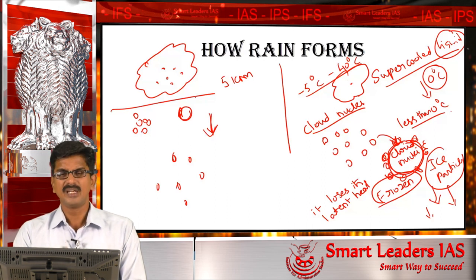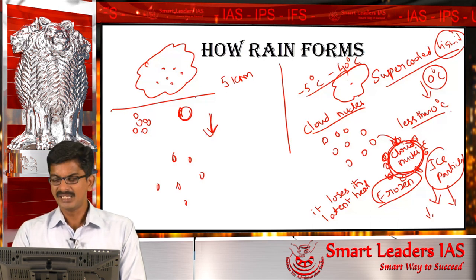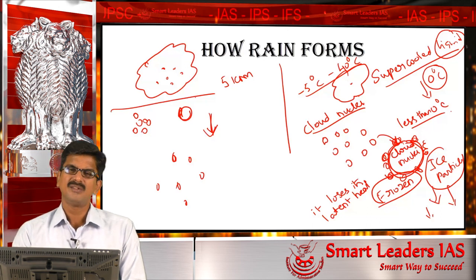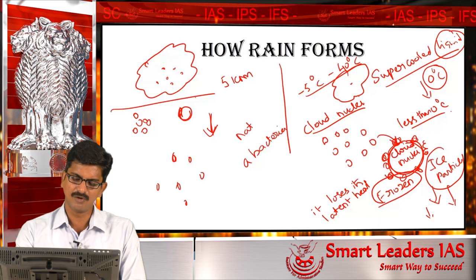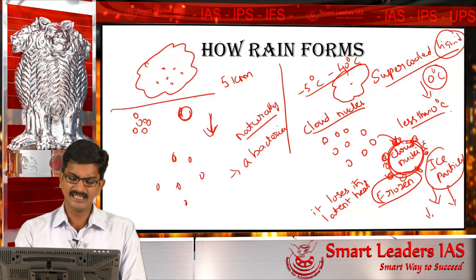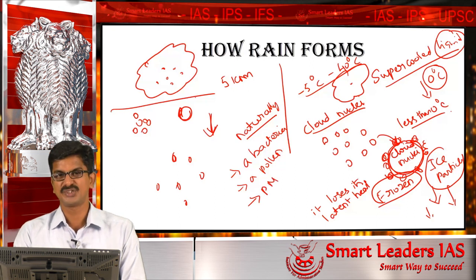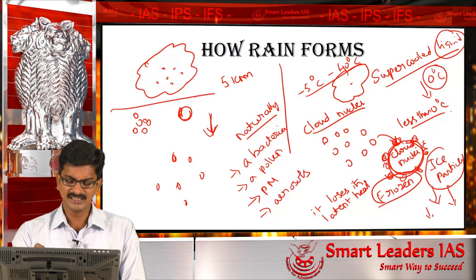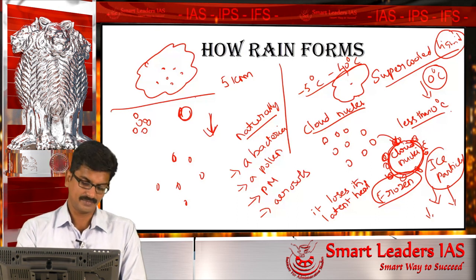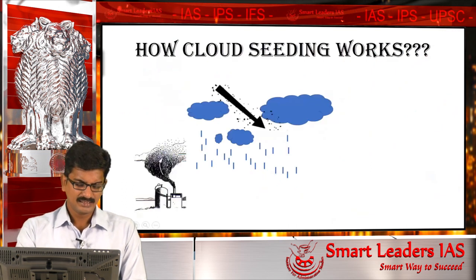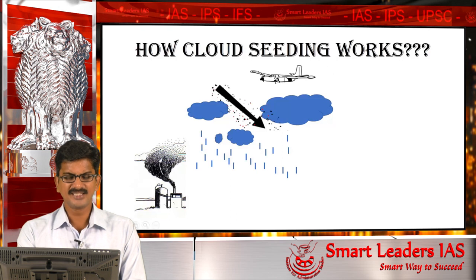In cloud seeding, we are using the second method of how rainfall occurs — we are artificially providing cloud nuclei. Naturally, what are the sources for cloud nuclei? Bacteria, pollen grains, particulate matter suspended in the atmosphere, and aerosols are the natural sources of cloud nuclei. In cloud seeding, we are artificially providing cloud nuclei through aerial means — providing cloud nuclei particles above the cloud.